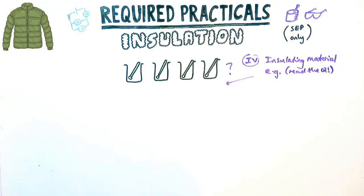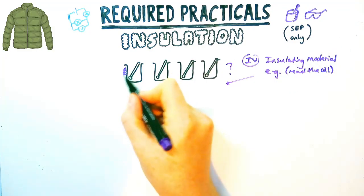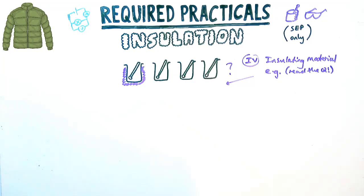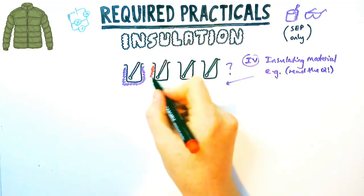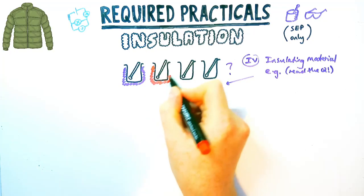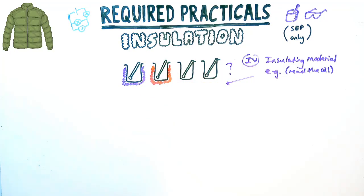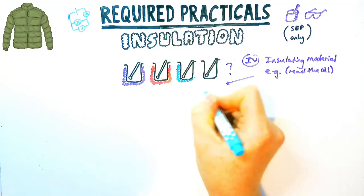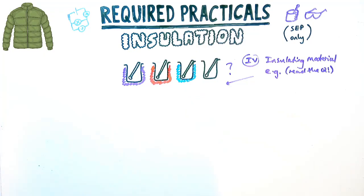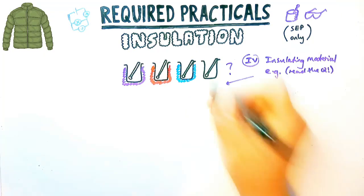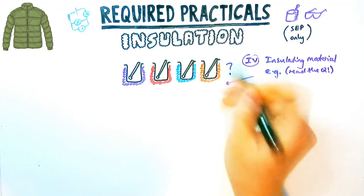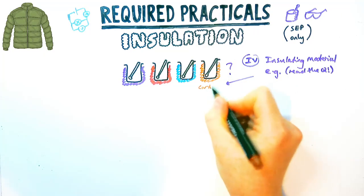For this practical, there are a couple of things you could use as your independent variable. One of them is the insulating material, but you have to read the question carefully to figure out if it's the material or the number of layers, and if it is material, what exact materials are you using.